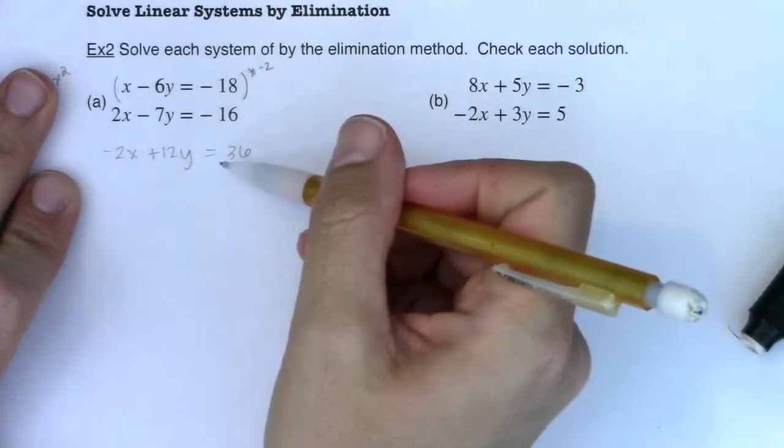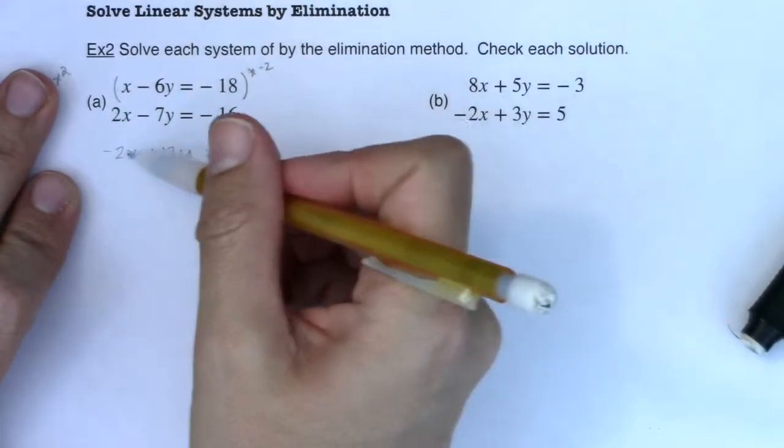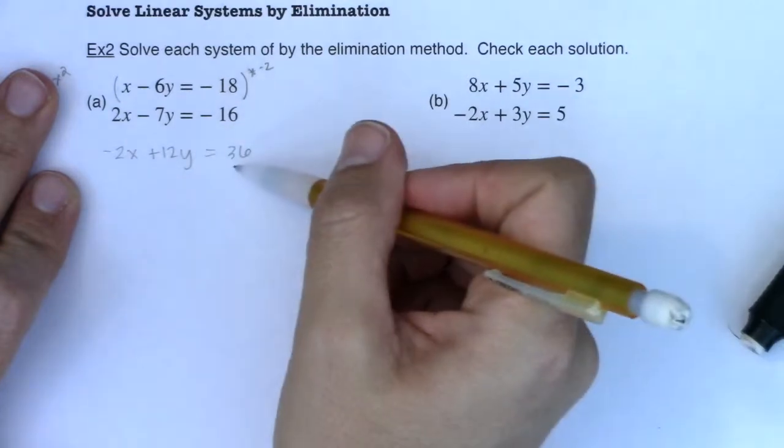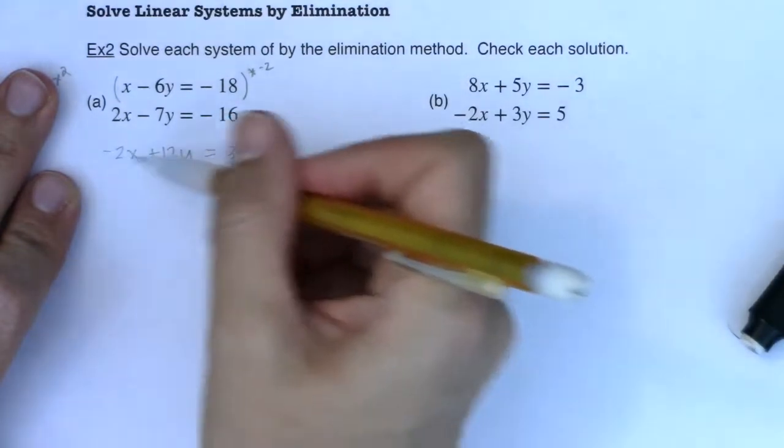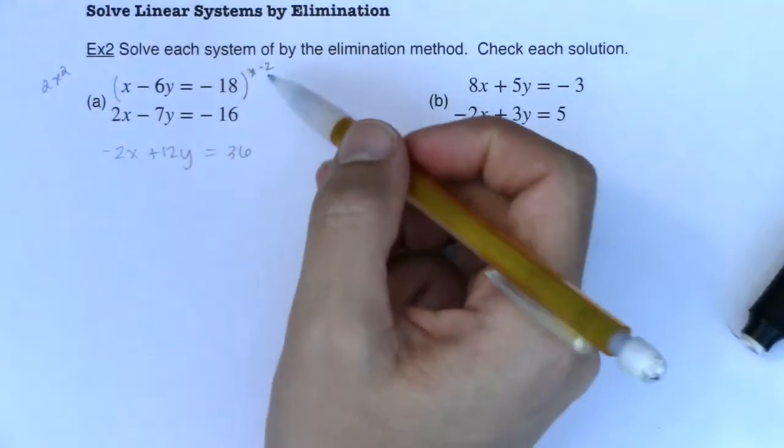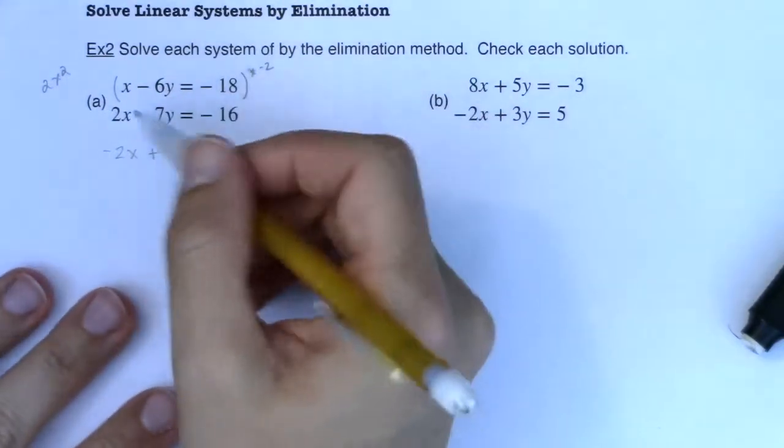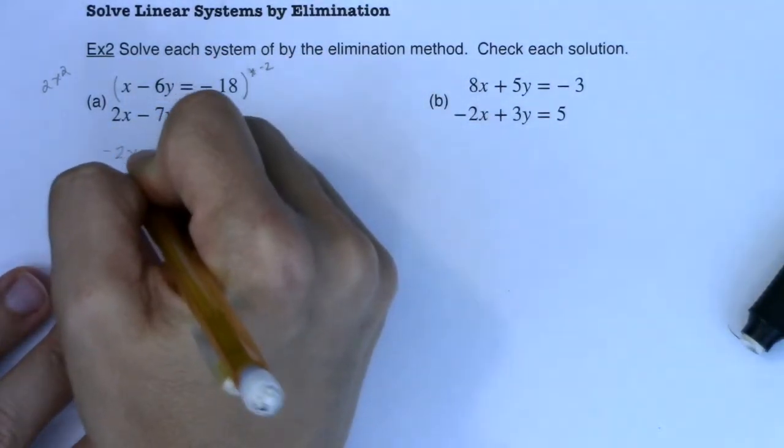So I've altered my first equation. It keeps the same ratio. So I haven't changed this equation of the line. It's just got some multiples on it. Or really I've multiplied everything by negative two. I'm going to keep the second equation as is.